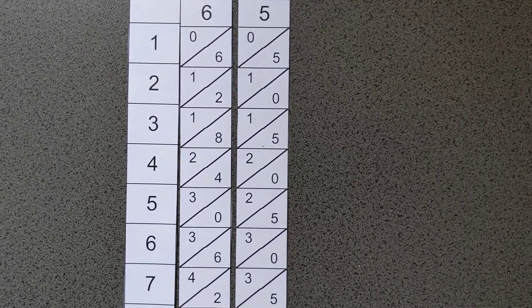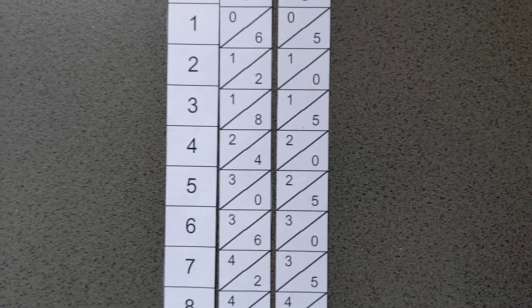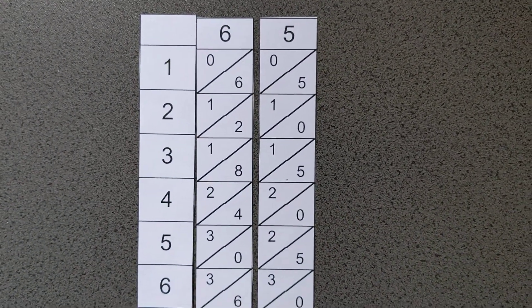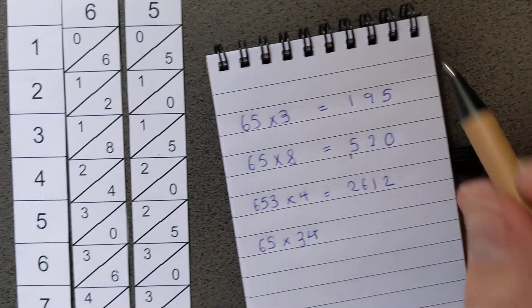So if I did 65 times 34, you do it in two stages. So I'd do 65 times 3, well, we've already done that, so 65 times 3 is 195.